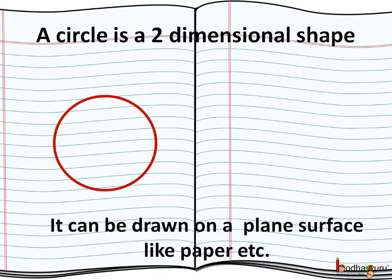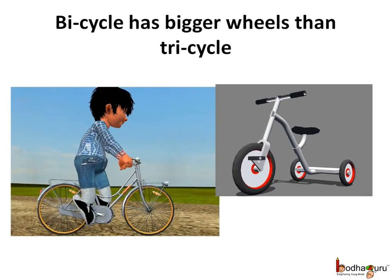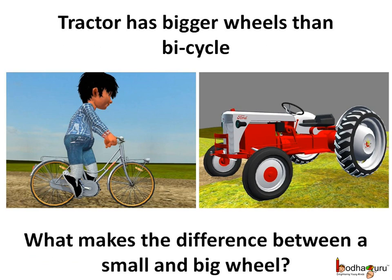Let us understand more about the circle and then define it precisely. What is the difference between the wheel of a bicycle and the wheel of a tricycle? Yes, the wheels of the bicycle are bigger. And in this case, the wheels of the tractor are bigger than the wheels of the bicycle. All the wheels are circular in shape. If someone asks you what makes the difference between a smaller wheel and a bigger wheel, let us understand it.